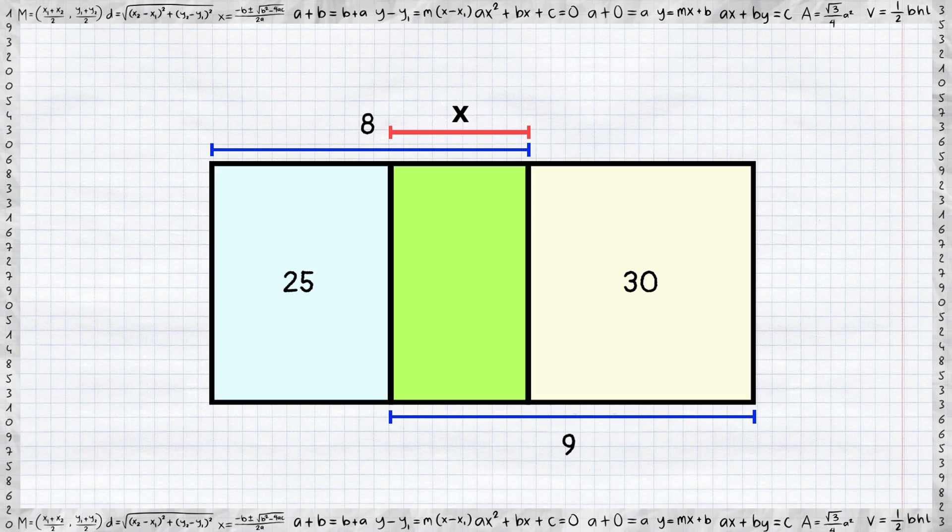Now, if the second rectangle has a width of x, we can express the width of the first rectangle as 8 minus x. Let's extend this approach to the third rectangle.